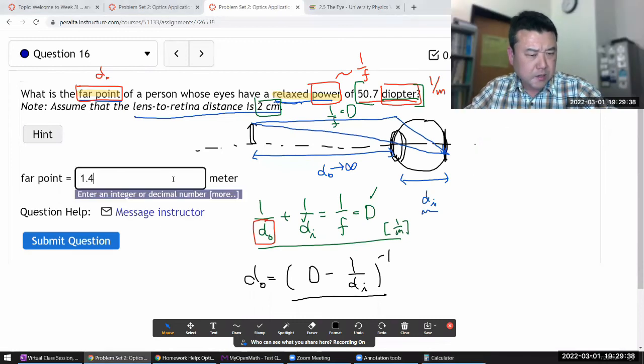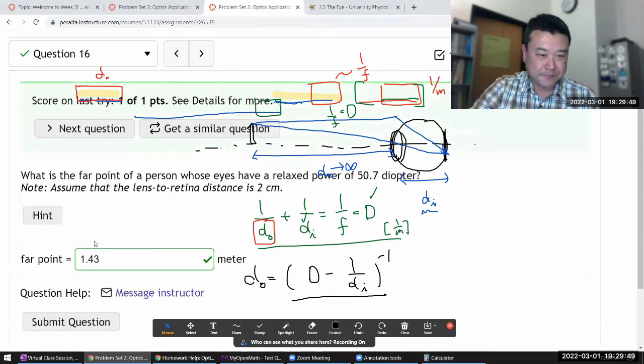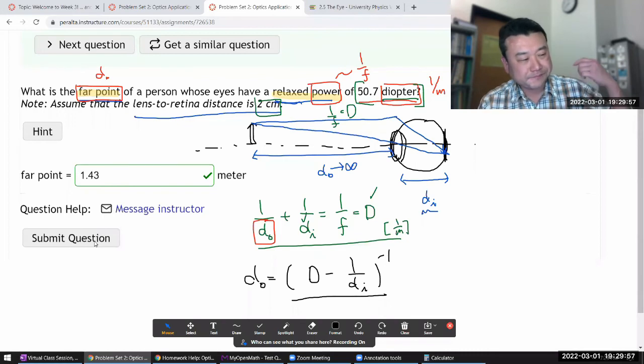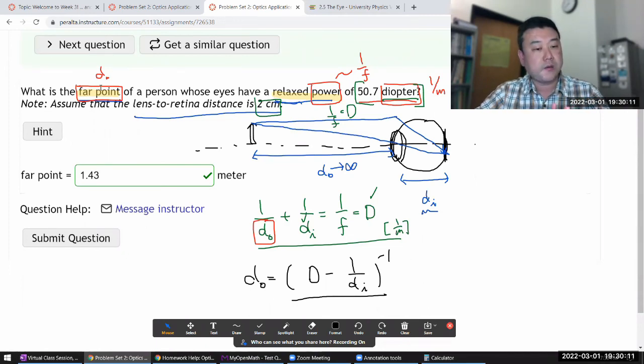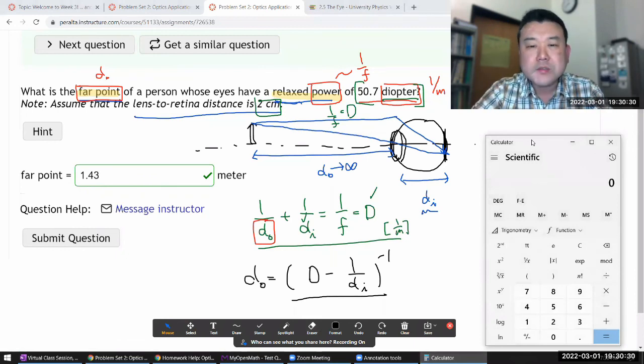And so this person must be pretty nearsighted, because that's pretty close, and that's the farthest this person can see. They probably need fairly high-powered eyeglasses in order to see things that are far away. Now, one thing you can see from these expressions is, imagine you wanted this far point to be really far away, like infinity away. Oh wait, you can't just say zero diopter. I think there's some kind of a nominal diopter that normal eyes should have. Let me just check that.